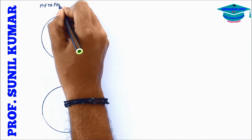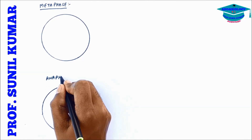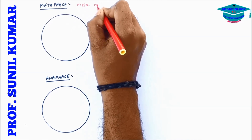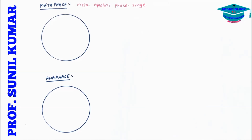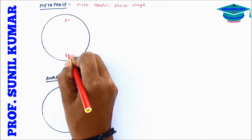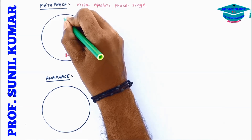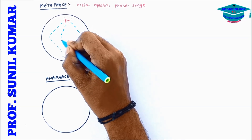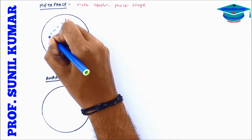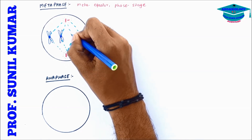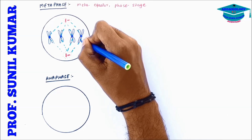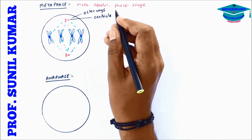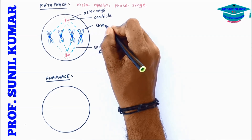The next stage is metaphase. 'Meta' means equator and 'phase' means stage. The chromosomes formed in prophase arrange themselves on the equatorial plane. The centrioles have moved to opposite poles, surrounded by aster rays, and both poles are connected by spindle fibers. All chromosomes attach via their centromeres and align on the equatorial plane.